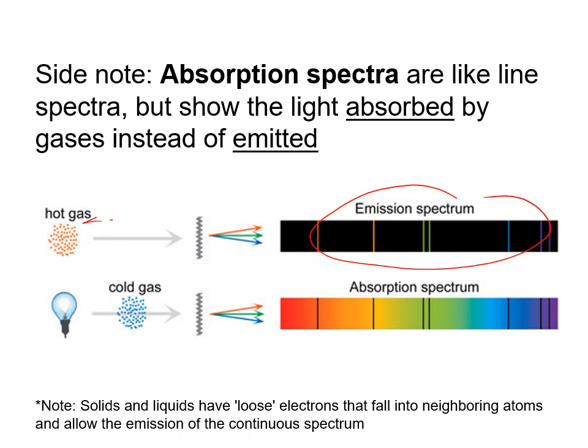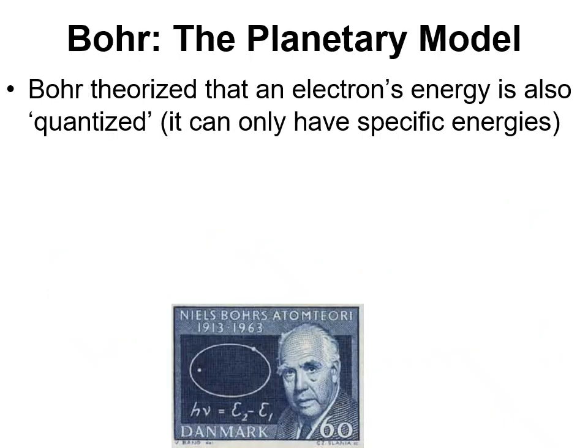Quick side note: emission spectra is the light being given off by a hot gas and is analyzed by a prism. If you were to pass white light through a cold gas, it would actually do the opposite. You get an absorption spectrum.